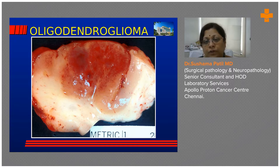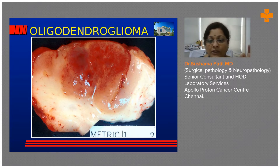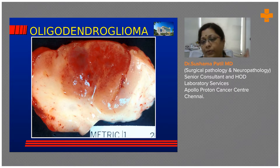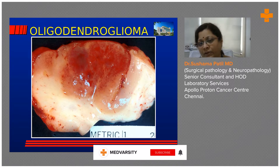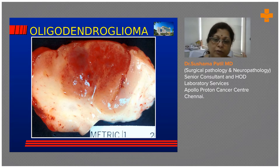Oligodendrogliomas come to attention very quickly because they infiltrate the cortex very fast, causing seizures. Seizures are a very prominent early symptom of oligodendroglioma, so they come to medical attention very quickly. This was the surgical resection specimen — you can see beautifully the tumor reaching all the way up to the surface, near the upper limits of the slide. This is a beautiful gross specimen of a glioma.